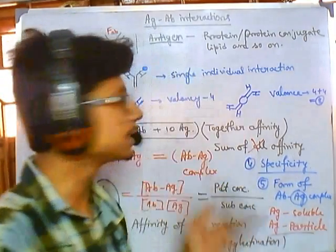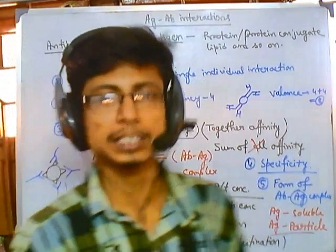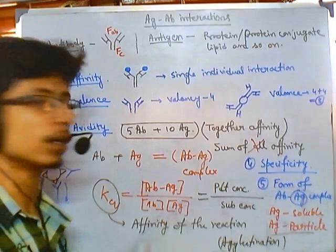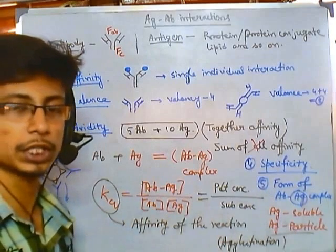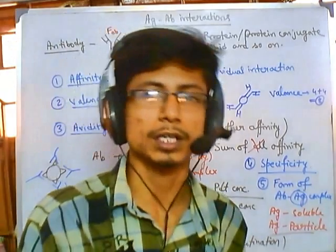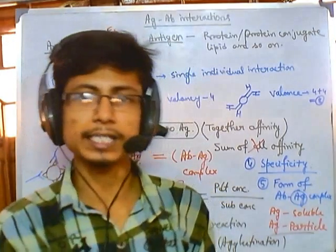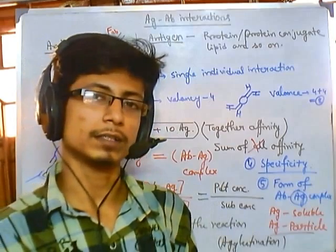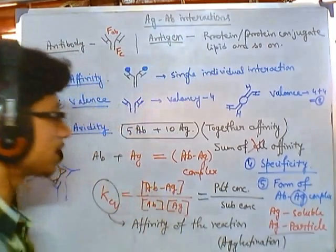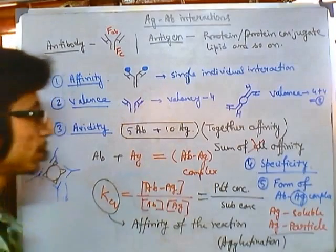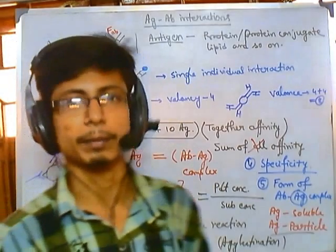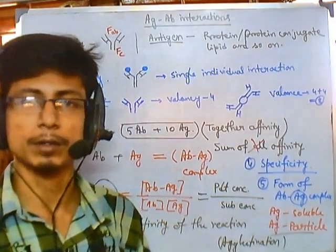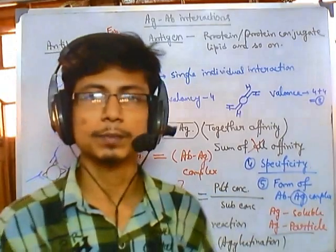So these things are important to understand antigen-antibody reactions. We are understanding these reactions because we can use features like affinity, avidity, specificity, and complexes like precipitation and agglutination to achieve very important techniques that we can utilize in the field of medicine and diagnosis to get different kinds of results. That is why it is important — we must know all these things to understand how to apply antigen-antibody interactions for our purpose. I hope that is helpful. Thank you.